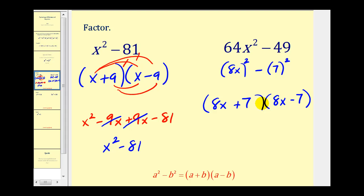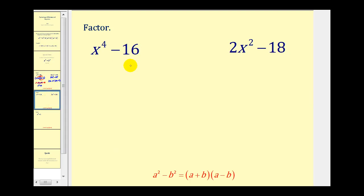Let's go ahead and take a look at a couple more examples. These next two aren't quite as straightforward. Here we have x⁴ minus 16. Well x⁴ is a perfect square, so is 16, and we have a difference.